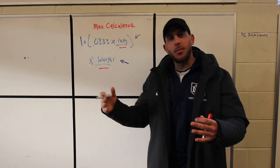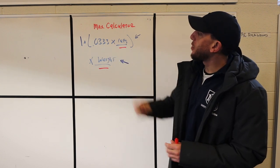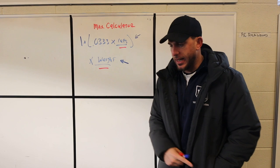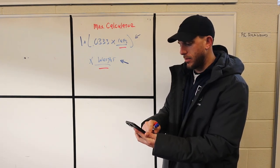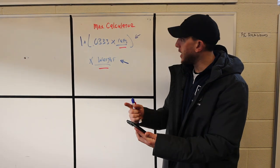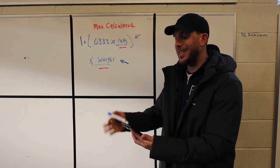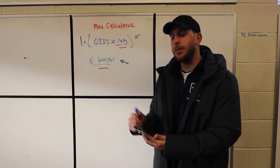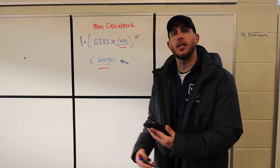In math you do parentheses first, so 5 × 0.0333 + 1. That's 1.1665. Then I'm going to times that by 200 because that's the weight that I did my workout with.